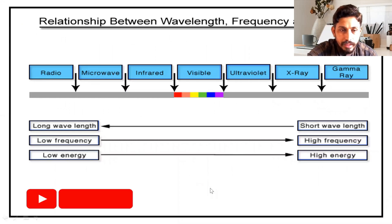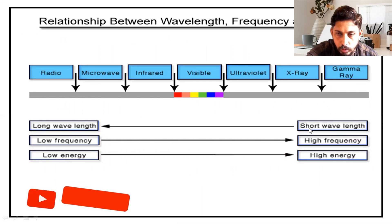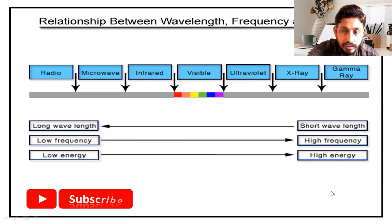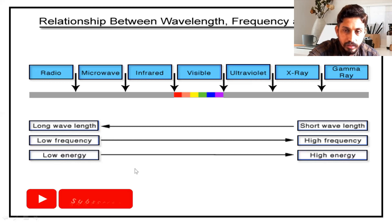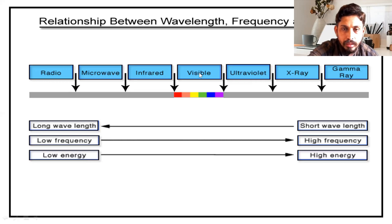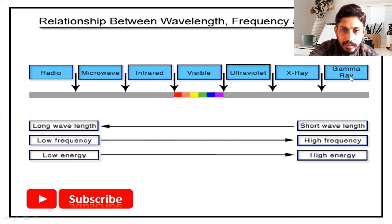Three important things to consider: shorter the wavelength, higher is the frequency and higher is the energy; longer the wavelength, lower is the frequency and lower is the energy. Energy radiated from the sun is in the form of short wave radiation, so the frequency and energy of solar energy are higher compared to energy radiated from the earth's surface. Looking at the electromagnetic spectrum from the visible band, as wavelength decreases energy increases — ultraviolet, X-rays, and gamma rays have higher energy compared to infrared, microwave, and radio waves.